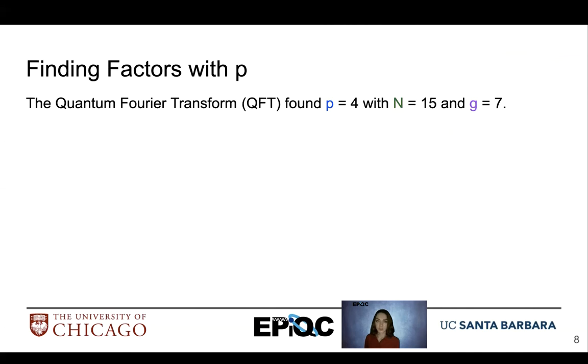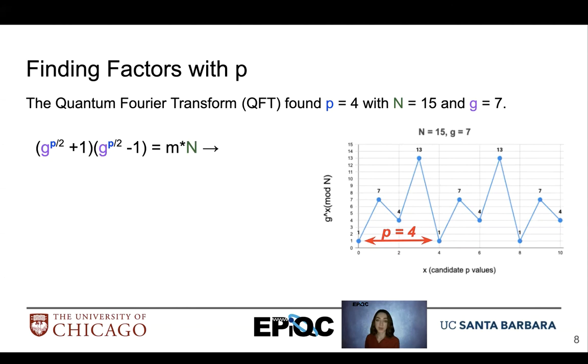So the QFT found value of p, found of p equal to 4, for n equal to 15, and g equal to 7. Now with that, we're able to find our factors of n, using our original equation that we defined earlier, using g raised to the p divided by 2, plus or minus 1, equal to n times n. So we find the greatest common factor of these two values, defined our factor, of our large value n.